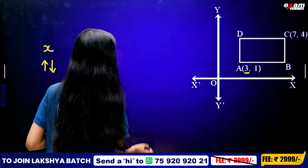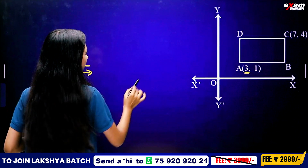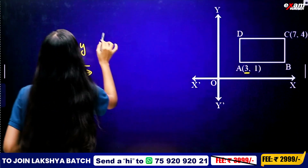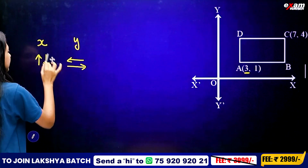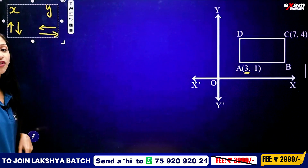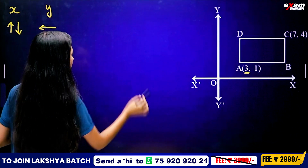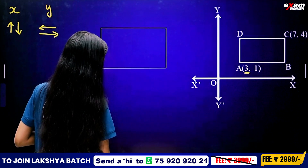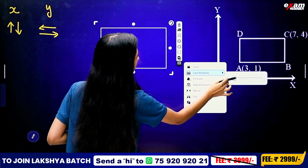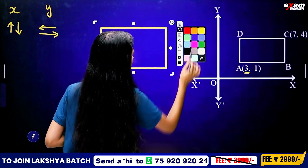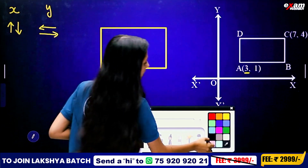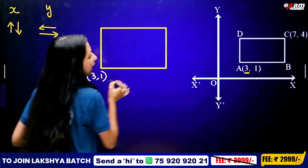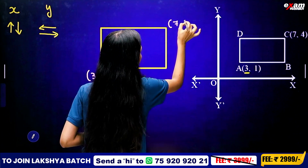Now we have a separate rectangle. We move along the x-axis and y-axis. We shift y to the left or right. Now we have our rectangle plotted. This rectangle has two coordinate points: (3, 1) and (7, 4).